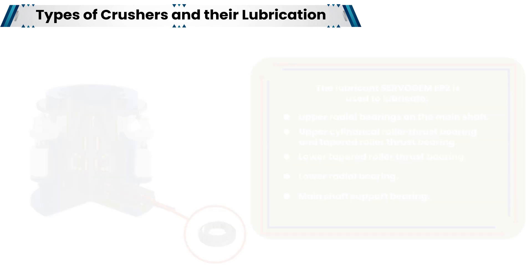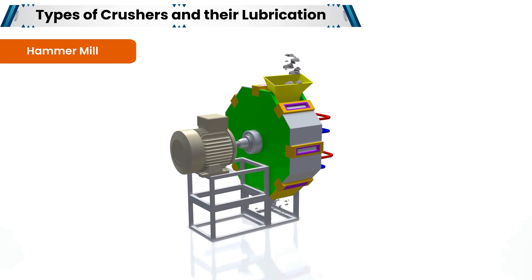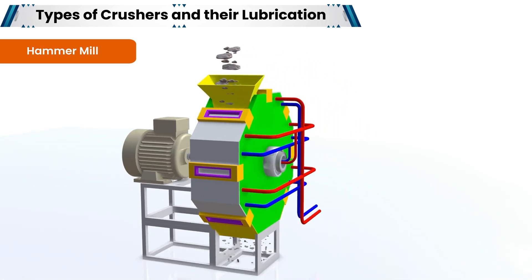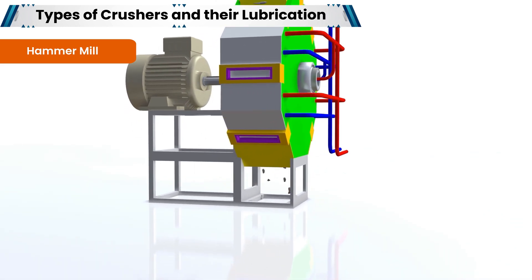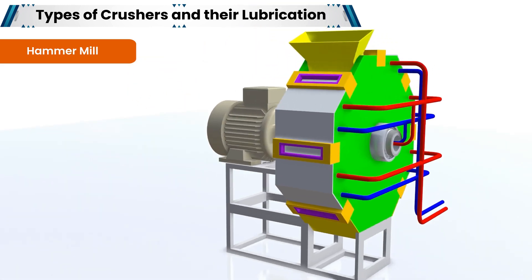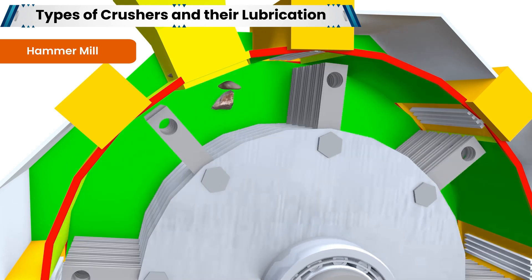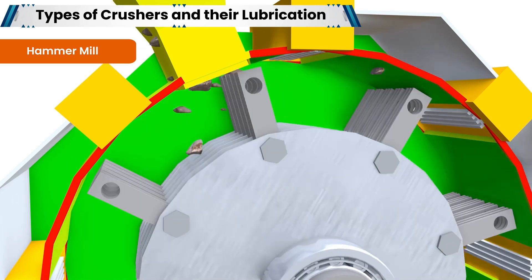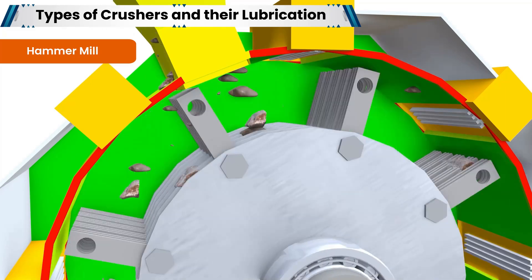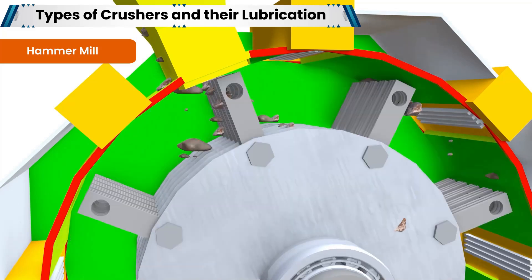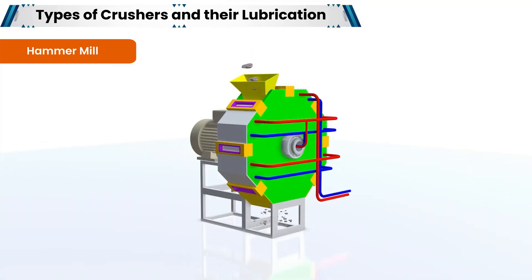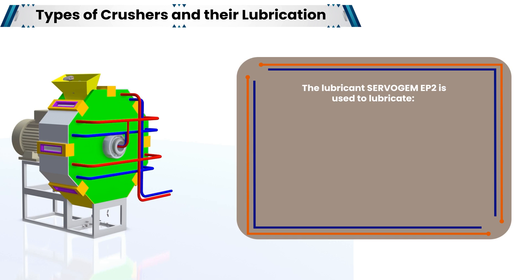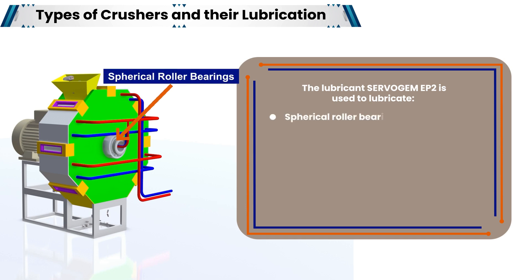In the hammer mill, material is reduced by dynamic impact; crushing then occurs by attrition and shear in the lower chamber, where small clearances exist between hammers and the grate screen. Materials smaller than the gap of the grate screen are discharged, and materials with larger particle sizes are bounced back to the lining plate and crushed by additional impact of the hammers. The materials also impact each other during the whole crushing process. The lubricant Servo GEM EP2 is used to lubricate spherical roller bearings mounted on each side of the hammer axle or main rotor shaft.